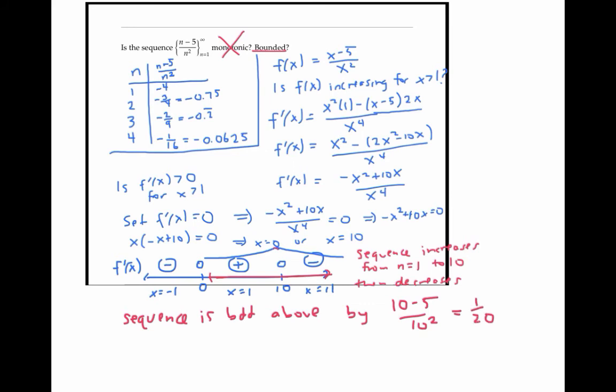Now notice that our sequence n minus five over n squared is always bigger than zero for n bigger than five, since the numerator and denominator are both positive in this situation.